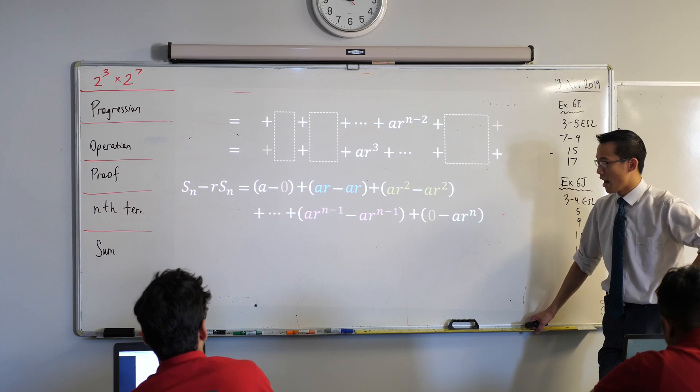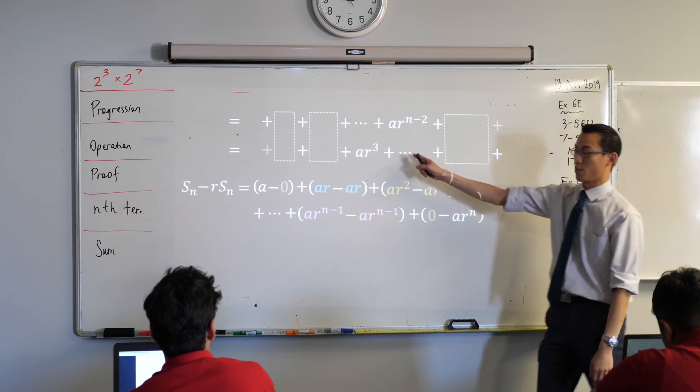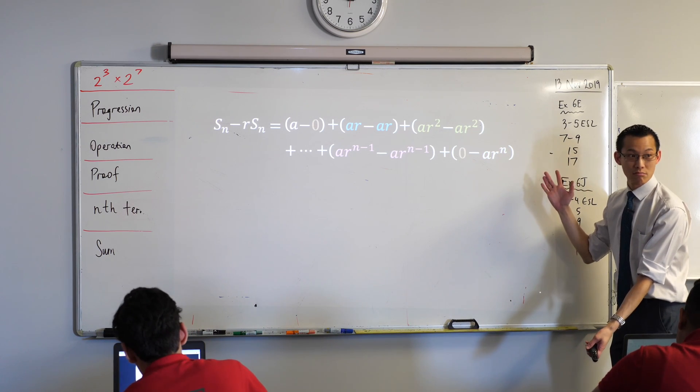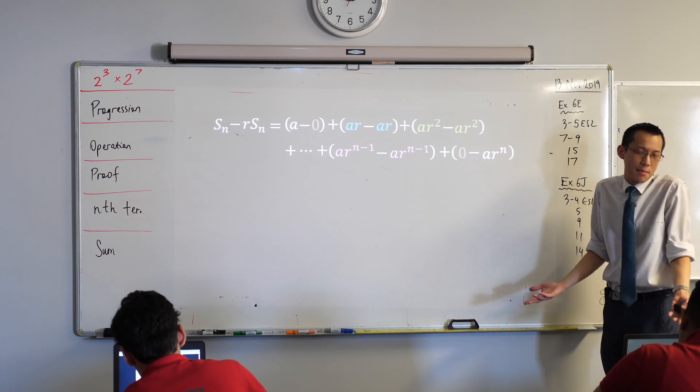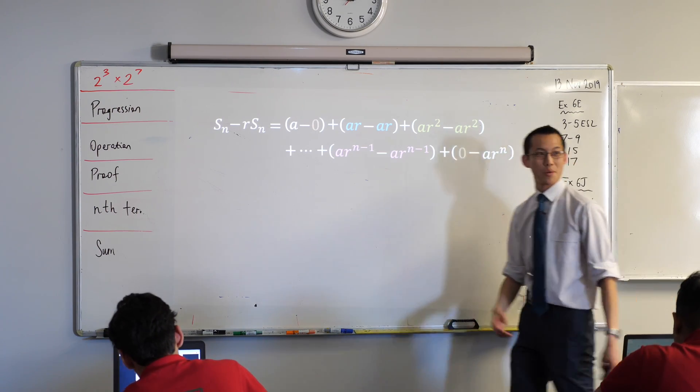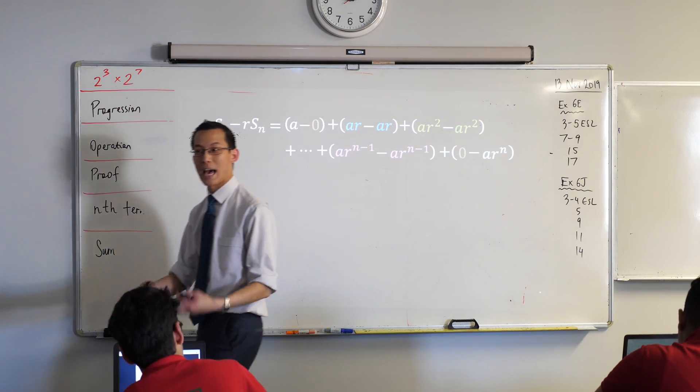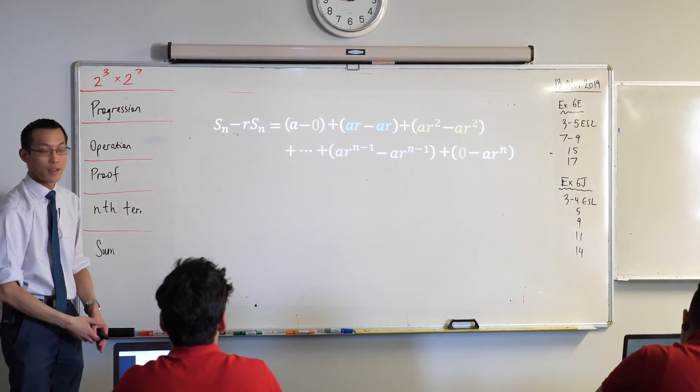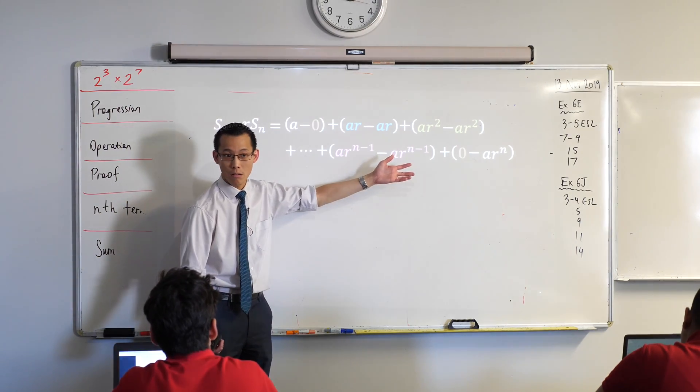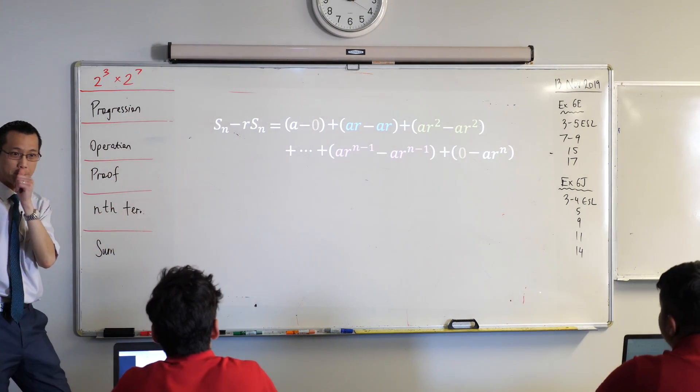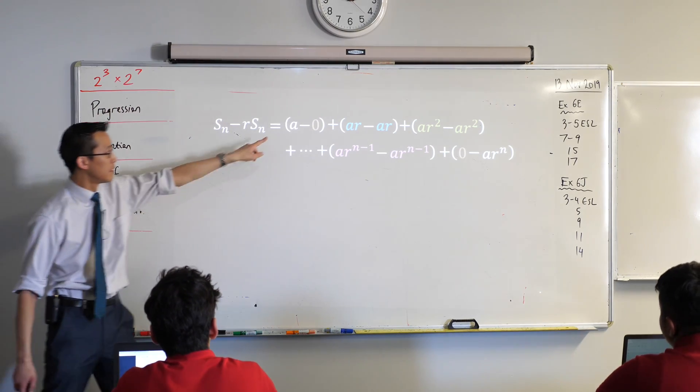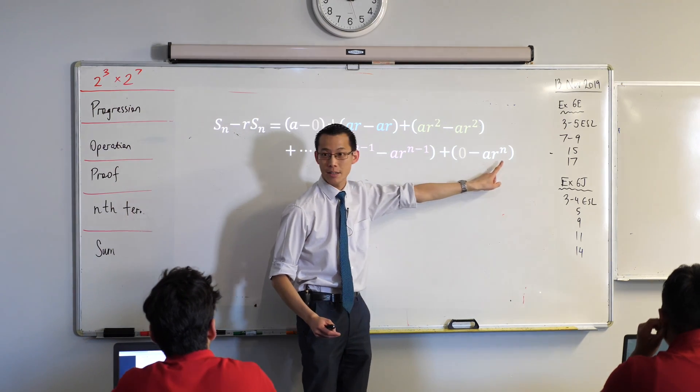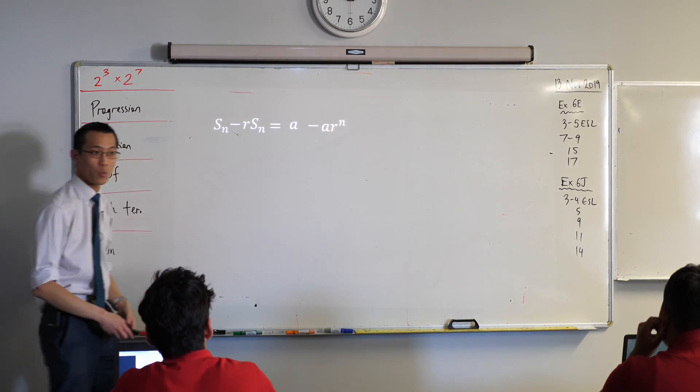When I do the entire line take away the entire next line then this is what you end up with. What's great about this is how much of this collapses, how much of it just sort of disappears. All those zeros they're gone. All these things where I've matched up the color they're all gone as well. What actually gets left behind? That a, nothing pairs up with it to cancel it out, and then the other guy that doesn't get cancelled out is ar^n. This is where we end up.